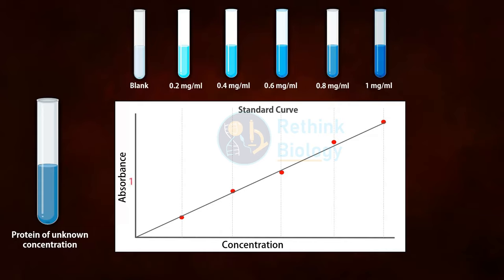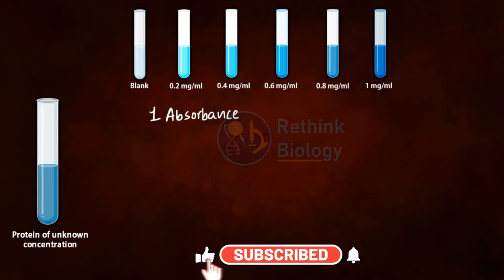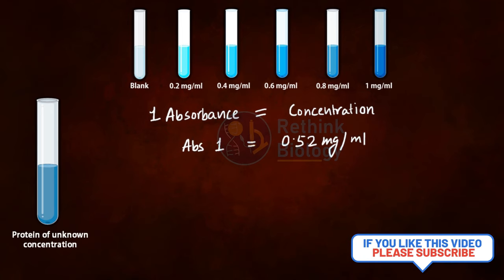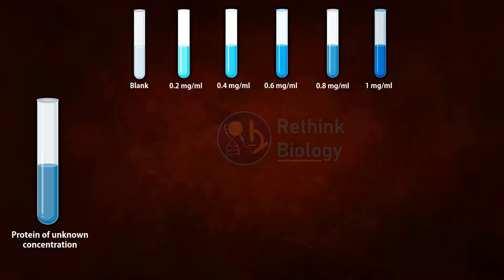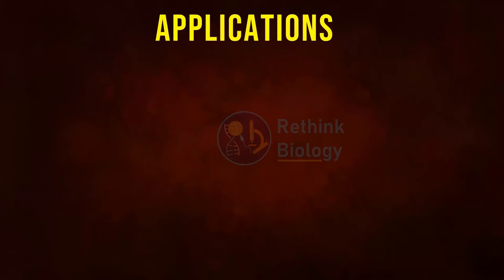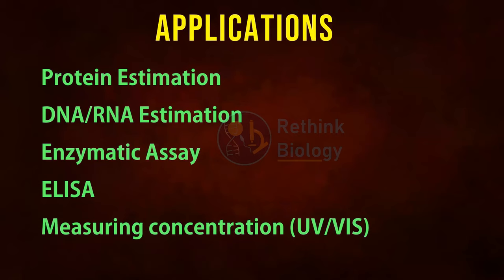From the standard curve, the value of absorbance is calculated. Using this formula, you can calculate the protein concentration of unknown samples. Apart from protein estimation, spectroscopy is used to measure DNA or RNA concentration, in enzymatic assays, in ELISA, or for measuring the concentration of any molecule that gives color in the UV-visible range when in solution.